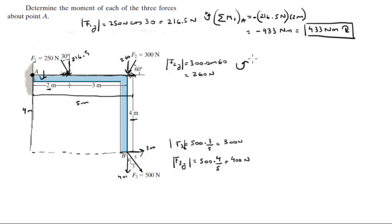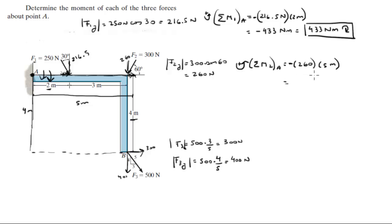The moment that Force 2 creates about point A equals 260 newtons times the lever arm of 5 meters. It turns the arm clockwise, so it's negative: 260 times 5 equals negative 1300 newton-meters, or 1.3 kilonewton-meters going clockwise.